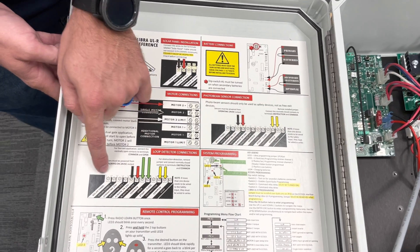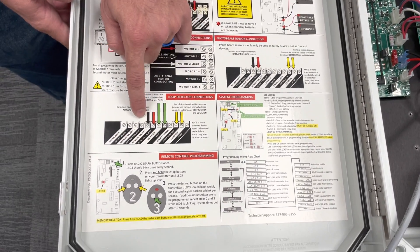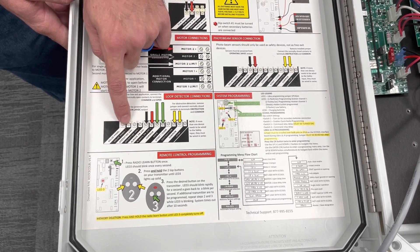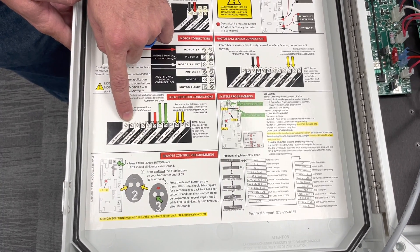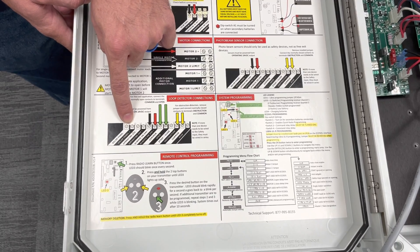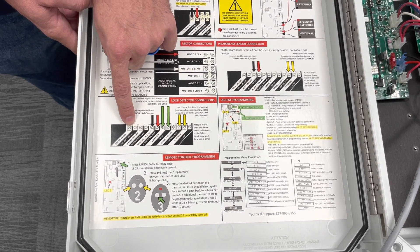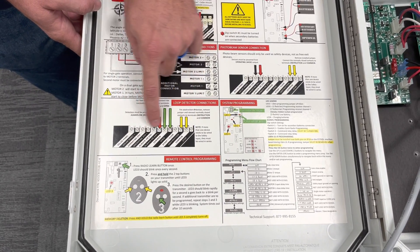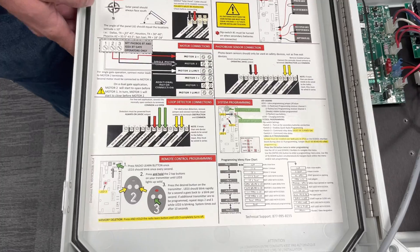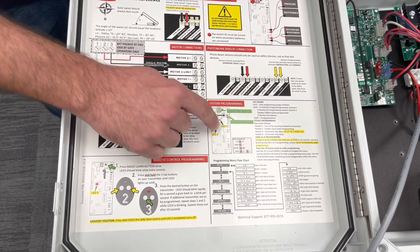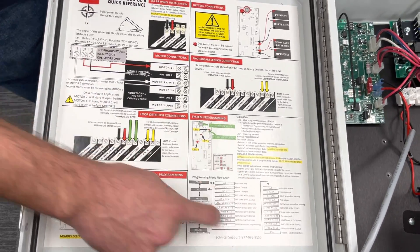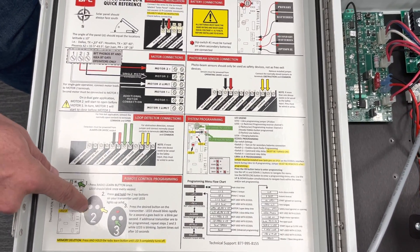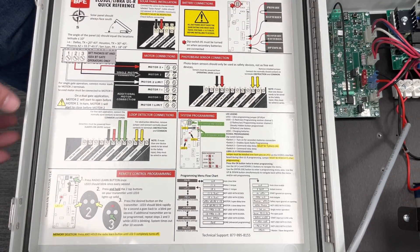If you have one motor or the motor you want to open first, you want to make sure you hook up to this motor two connection. If you have two motors or a secondary motor, that would go on the motor one connection just below. On this side, you just go in order from left to right. The solar panel goes in the first part. You want to make sure your solar panel is giving you 37 to 41 volts. If your solar panel is not giving you 37 to 41 volts, you're not charging the system properly.